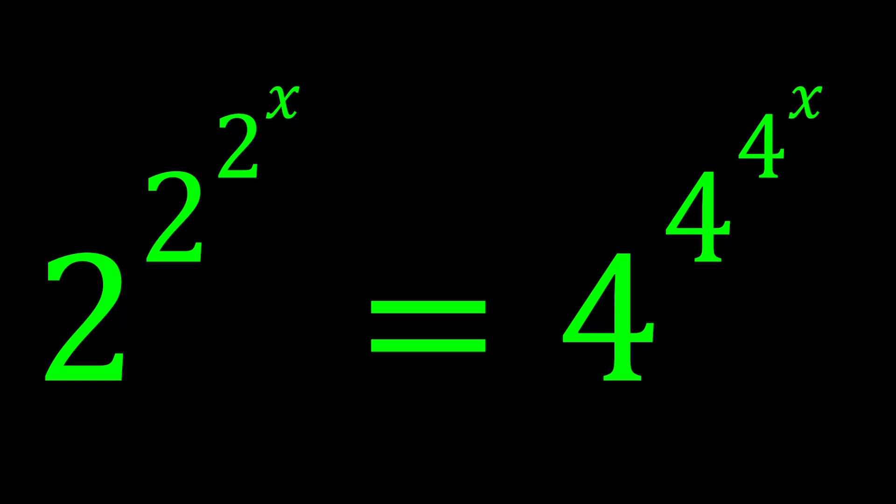I think we've done similar problems before. If I find them, I'm going to link them down below. I remember doing something like 4 to the 4 to the x and 2 to the 2 to the x, a tower with a lower height. But to be able to solve this problem, we're going to use powers of 2, and I think the results will be very surprising.